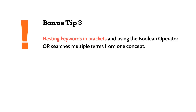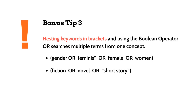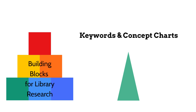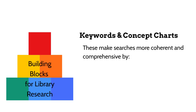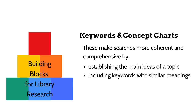Tip 3: Nesting keywords in brackets. Nesting keywords in brackets and using the Boolean operator OR searches multiple terms from one concept. Keywords and concept charts make searches more coherent and comprehensive by establishing the main ideas of a topic and including keywords with similar meanings.